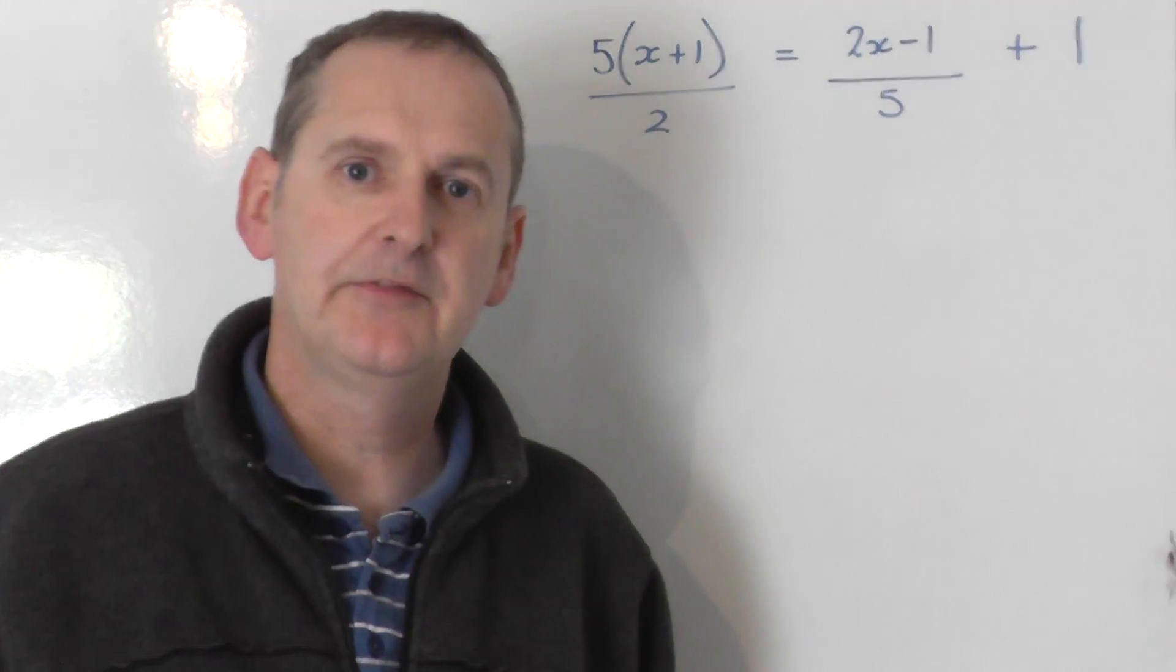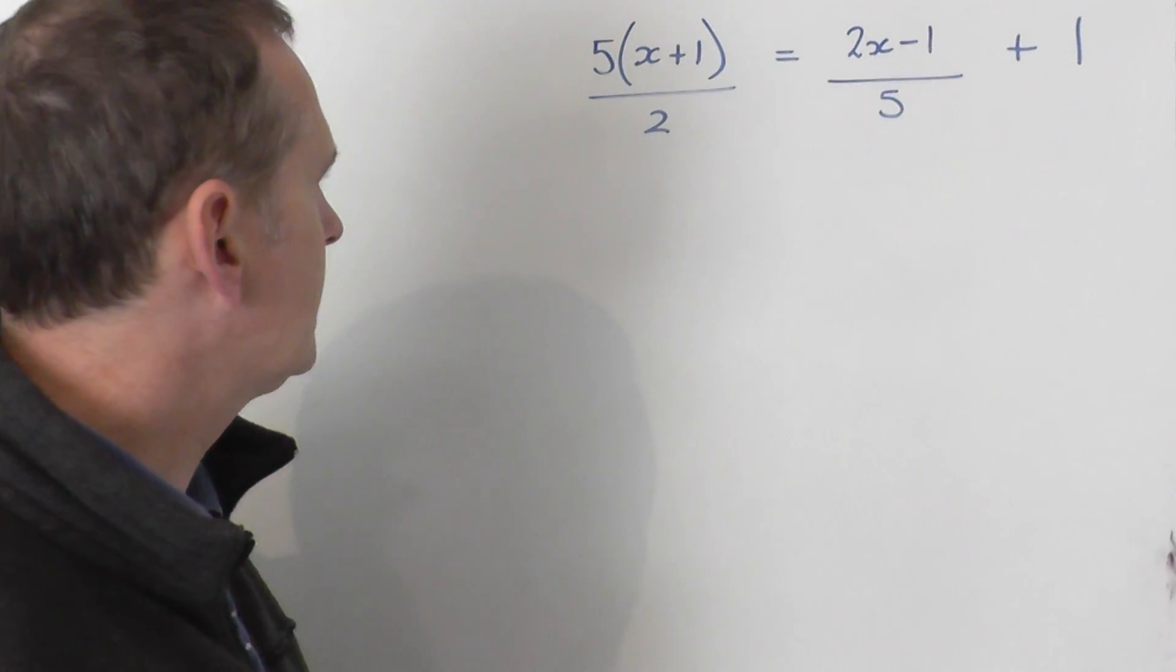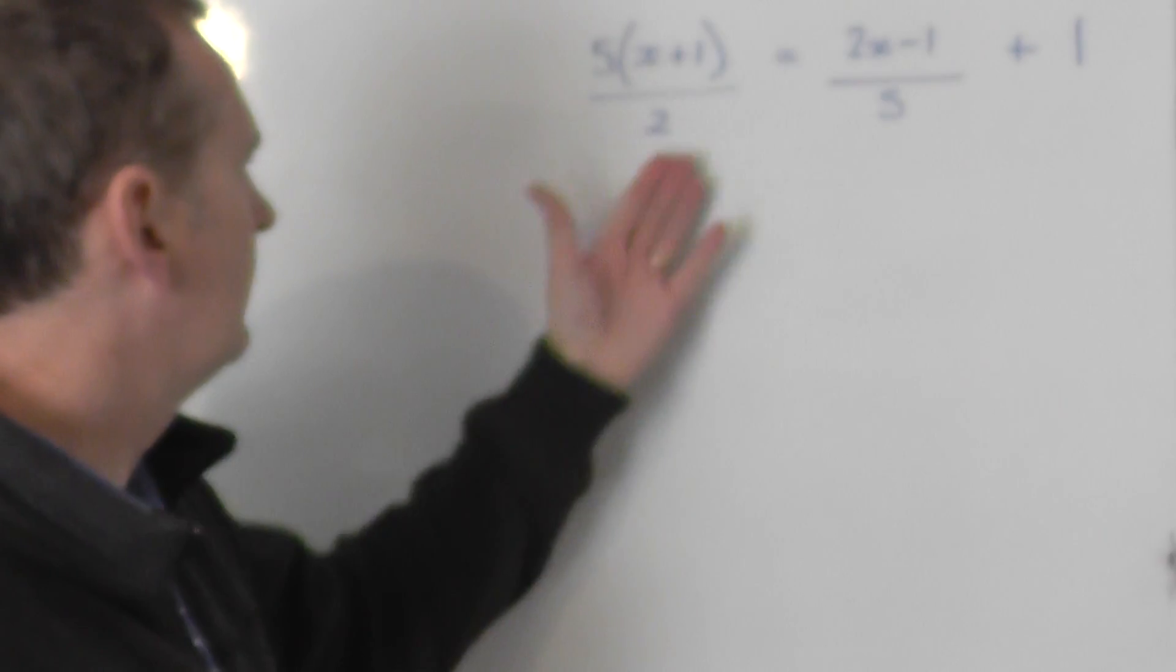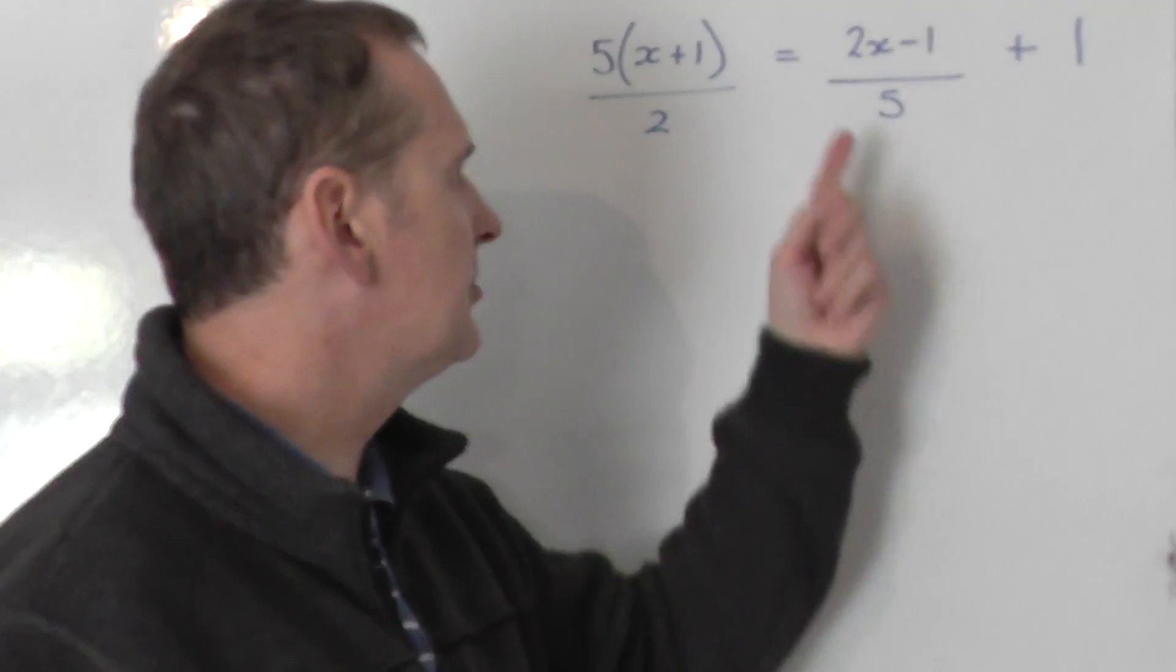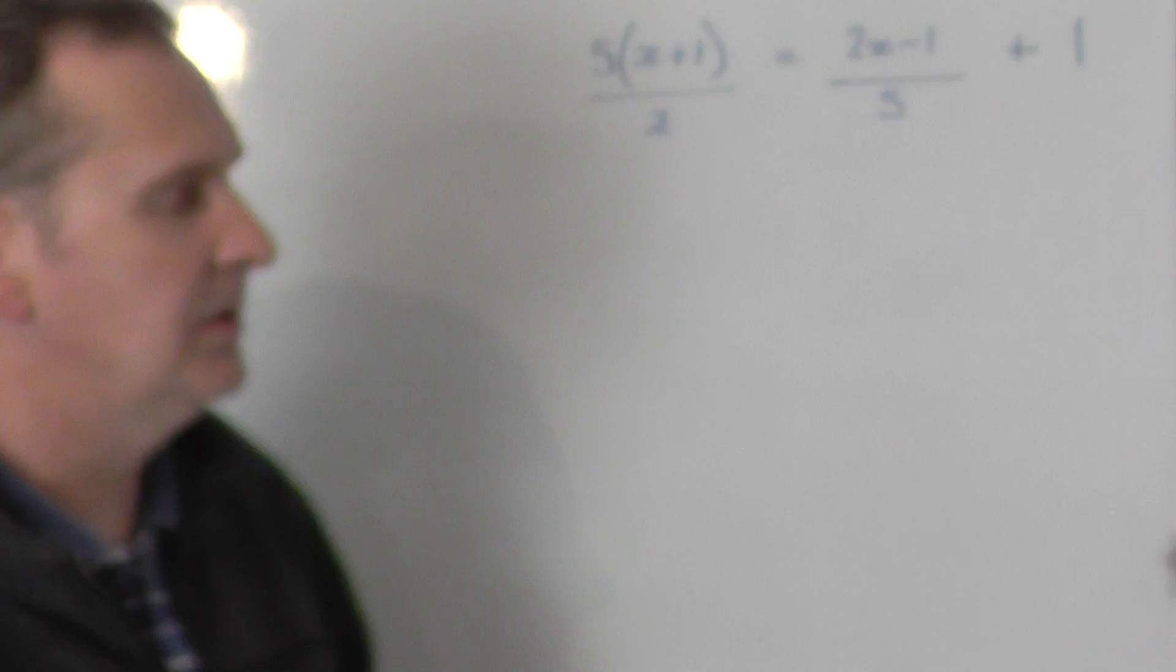Okay, here I'm going to solve this equation: 5 lots of x plus 1, all over 2, is equal to 2x minus 1, all over 5, plus 1.